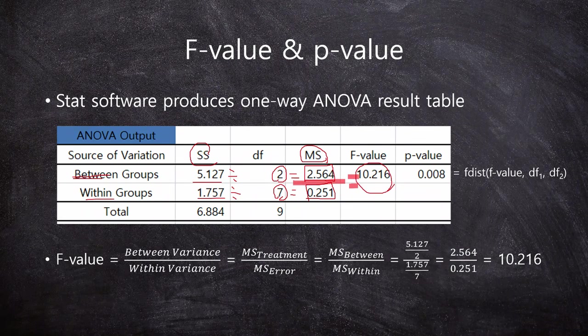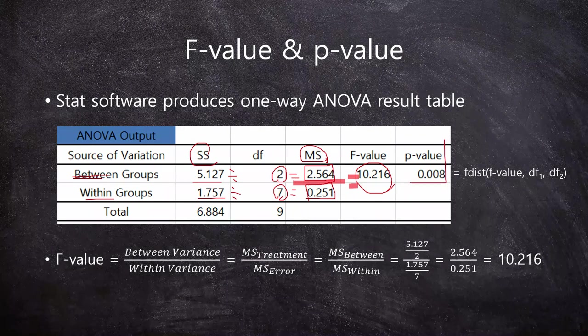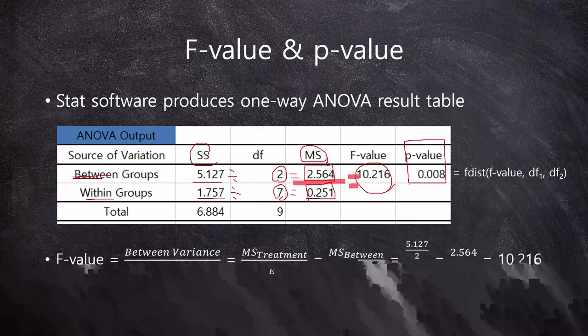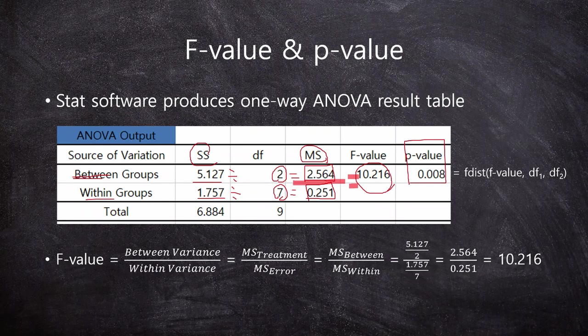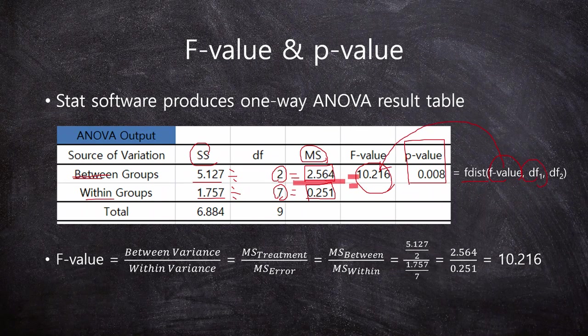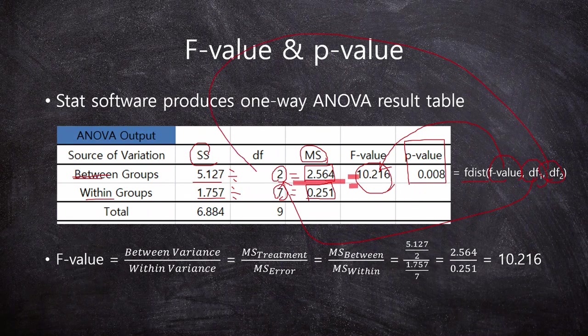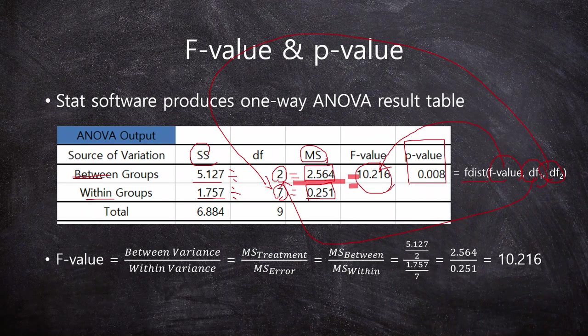And then, any stat software can show the number of p-value. Here, the p-value is 0.008, which means significant. If you want to check the p-value by yourself, you can use the F-dist function in Excel. You need three values: first is the F-value 10.216, DF-1 is 2, and DF-2 is 7. So you can check the p-value from Excel.